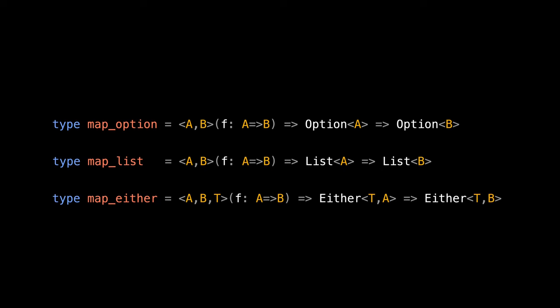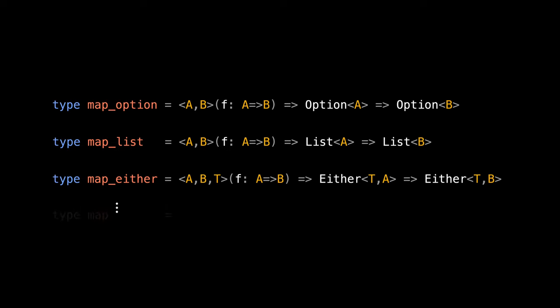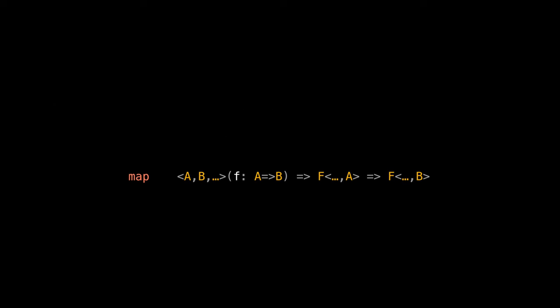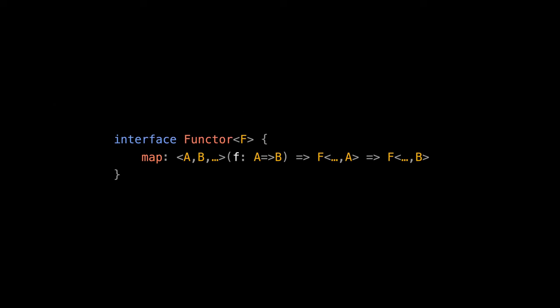Now the question is, how can we generalize and abstract all these map functions under one definition? What we are looking for is probably something like this. But how can we encode this in TypeScript? In order to do that, we first need to learn about higher kinded types and how to have them in TypeScript.